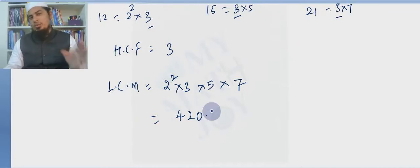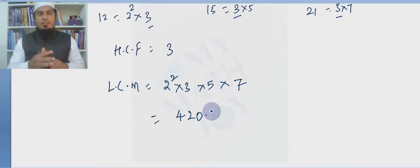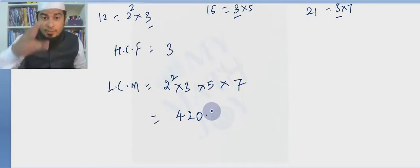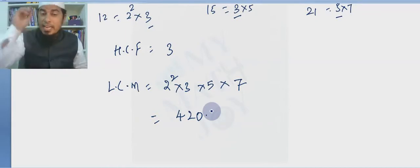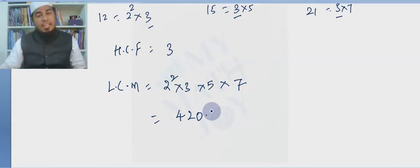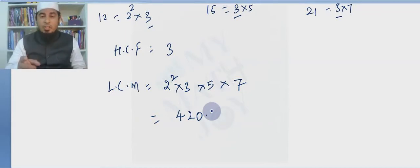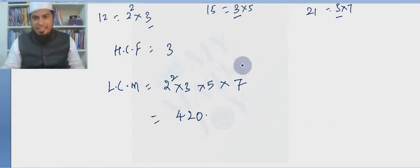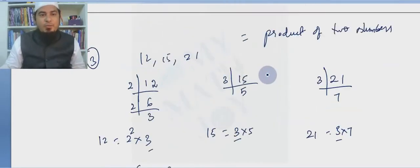We got HCF as 3 and LCM as 420 using the prime factorization method. If you want to check, HCF times LCM is not equal to the product of three numbers — it is not valid for three numbers. The fundamental theorem is valid only for two numbers.